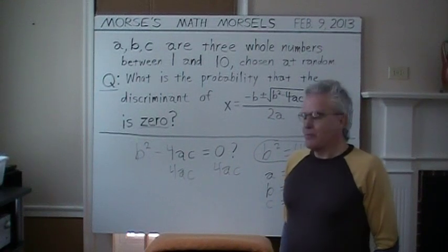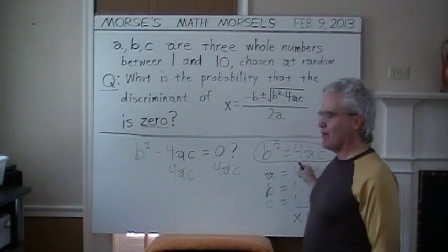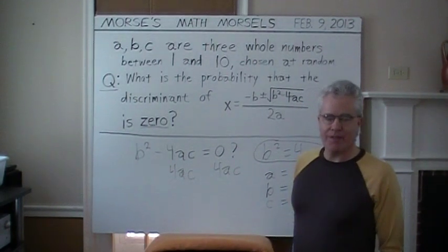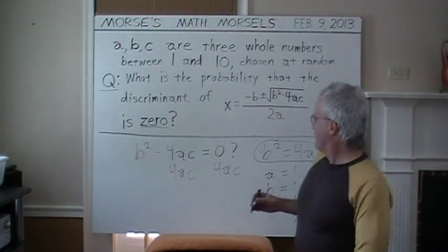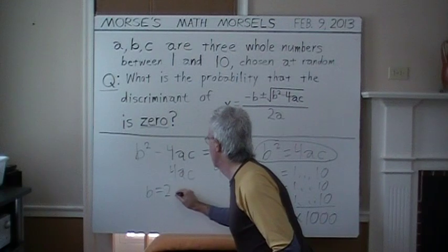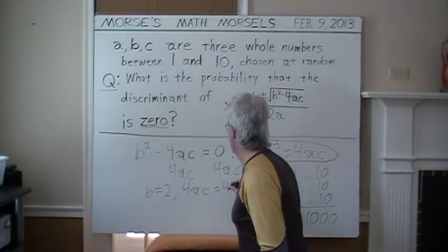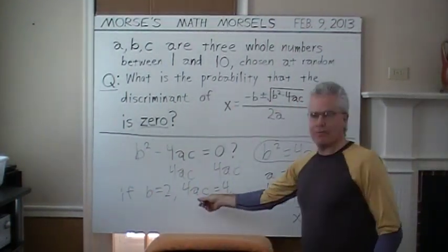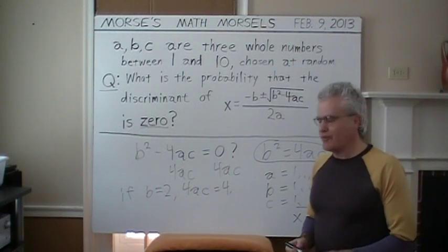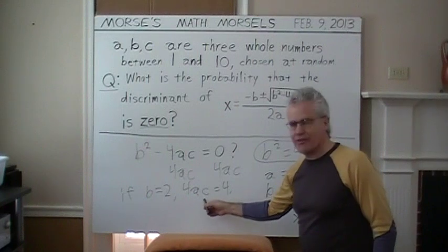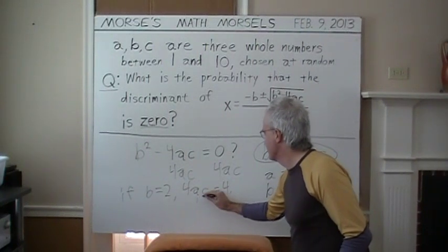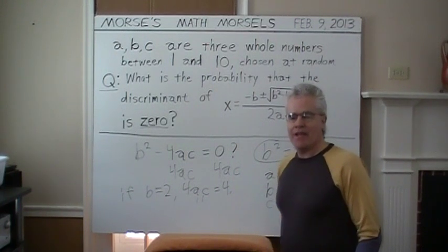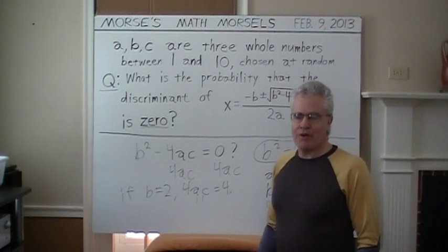So, let's move on to all our possibilities for B squared and compare it to 4AC. Again, those two expressions must equal. Can B equal 2? Let's see, if B equals 2, 4AC must equal 4. Is there a way for 4 times A times C to equal 4? Yes, there is only one way. A and C must each be 1. 4 times 1 times 1 equals 4. So, we have found one triple. B equals 2, A and C are each equal to 1. So, that's one possibility.